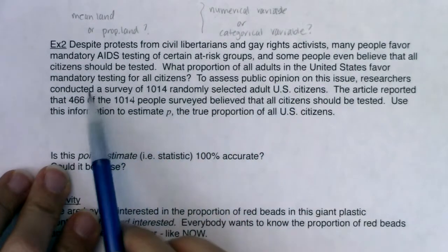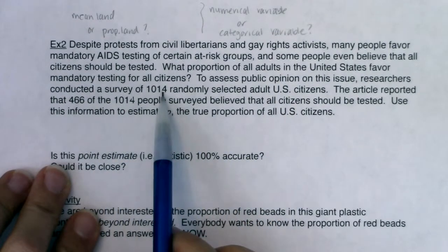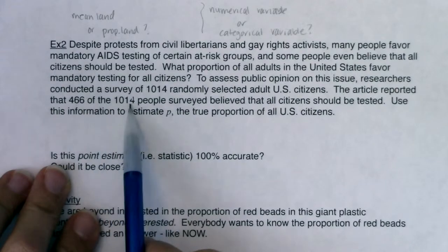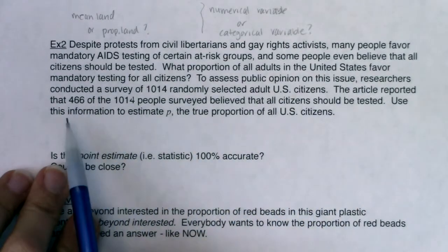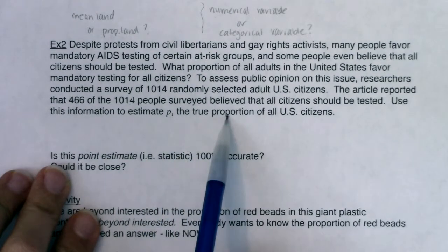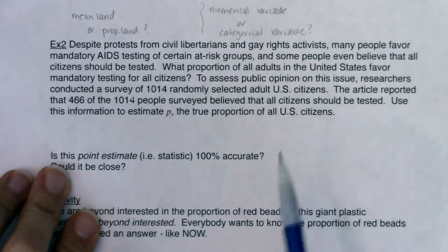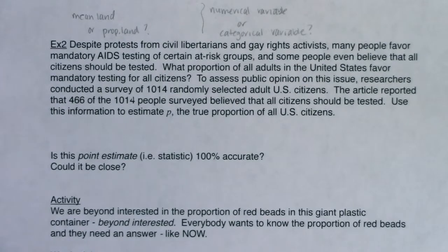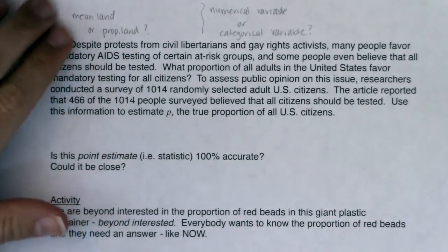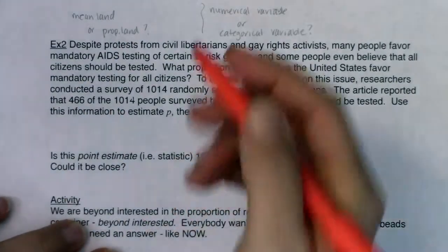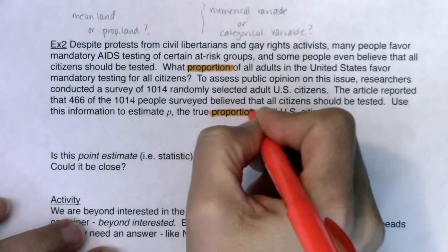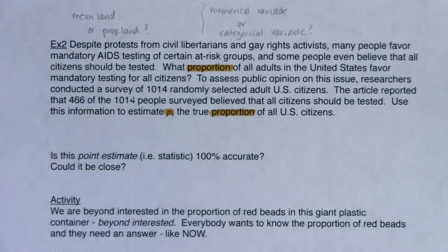To assess public opinion on this issue, researchers conducted a survey of 1,014 randomly selected adult US citizens. The article reported that 466 of the 1,014 people surveyed believe that all citizens should be tested. Use this information to estimate p, the true proportion of all US citizens. When I ask am I in mean land or proportion land, I would hope the word 'proportion' stood out — I saw it multiple times, and also the letter p, which is a great way of recognizing that I'm in proportion land.